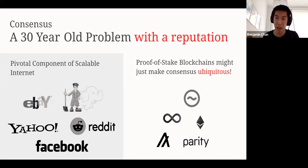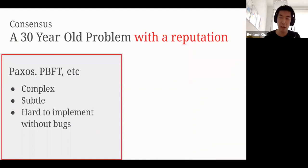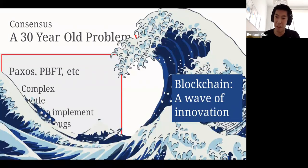Because consensus protocols have a reputation. Protocols like Paxos and PBFT, classical protocols that everyone learns in a distributed systems class, they're complex, they're subtle, and they're hard to implement without bugs. This reputation is quite deserved. I think these protocols are actually very complex. But of course, where funding and problems come, we also have innovation.